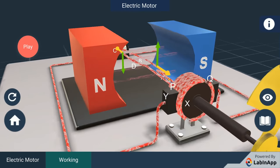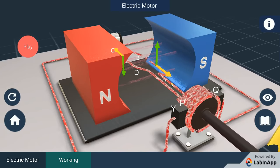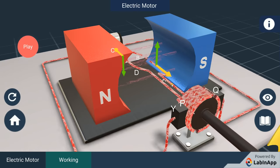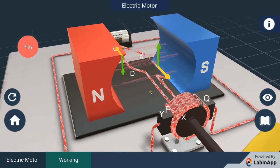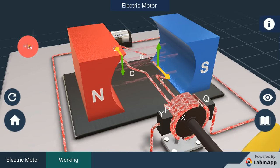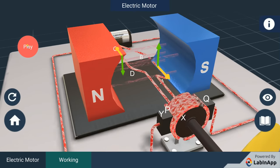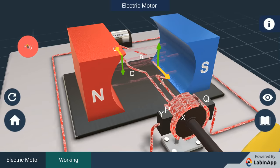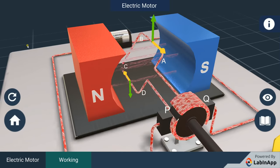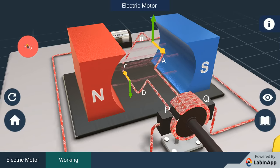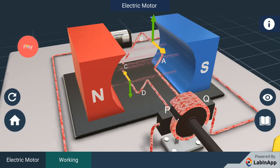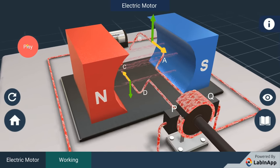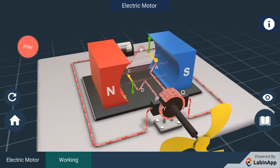The reversal of current also reverses the direction of the force acting on the two arms AB and CD. Thus, the arm AB of the coil that was earlier pushed down is now pushed up and the arm CD, previously pushed up, is now pushed down. Therefore, the coil and the axle rotate half a turn more in the same direction.